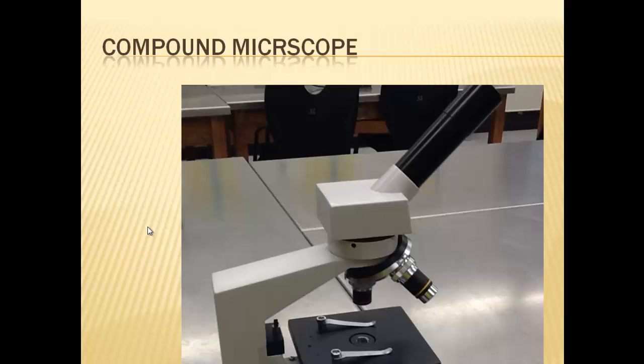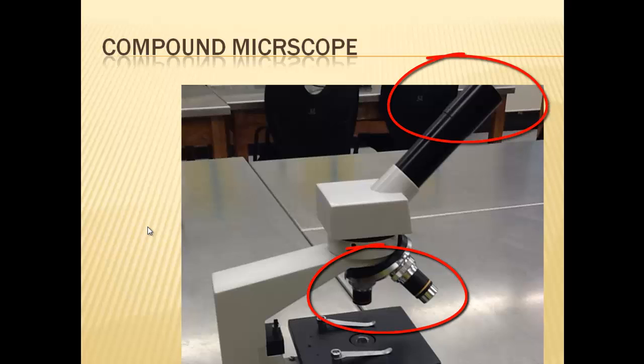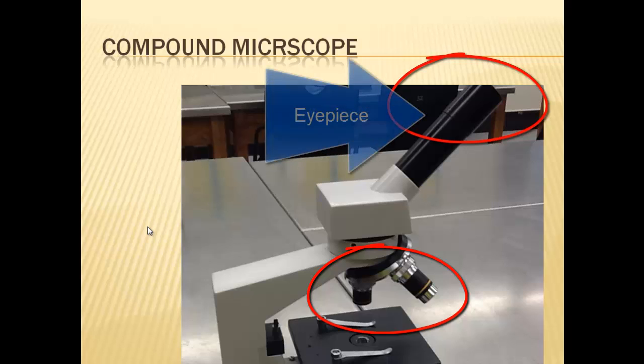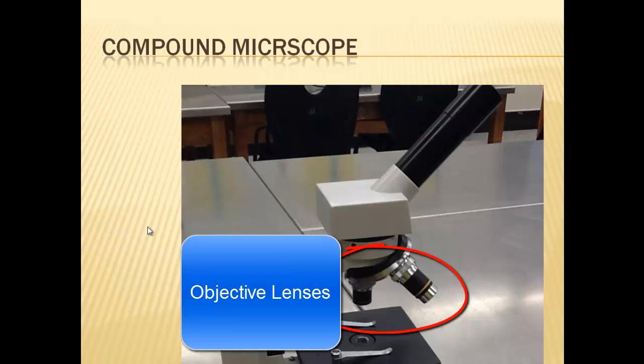A compound microscope, one that we're going to be using in the classroom, is more than just a simple microscope. It has several lenses that we're going to be looking through. We're going to be looking through what's called the eyepiece, and then it's also going to direct our vision through what's called an objective lens. That way it magnifies what we're seeing more than a typical just one lens. It's actually magnifying twice.